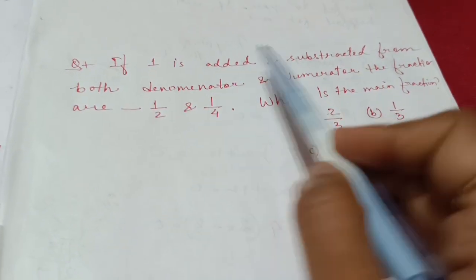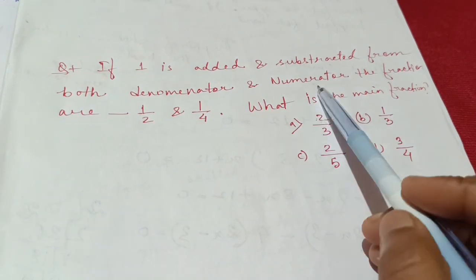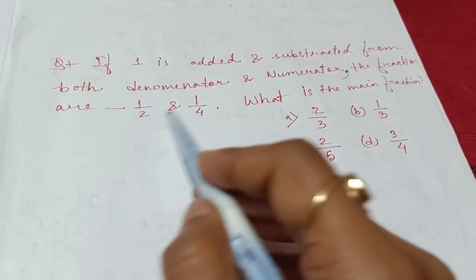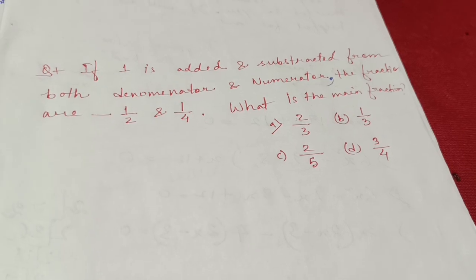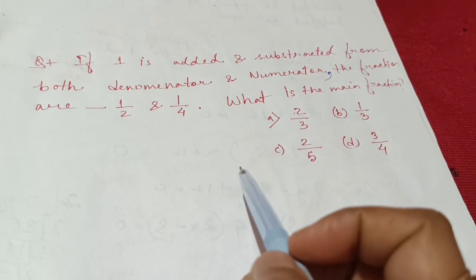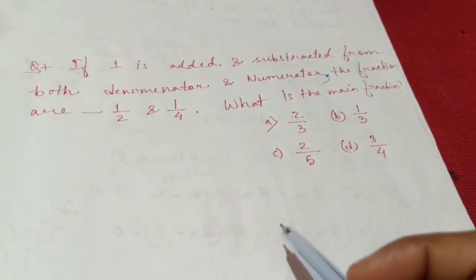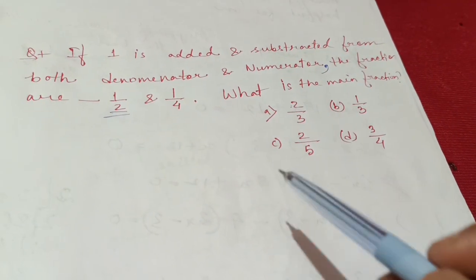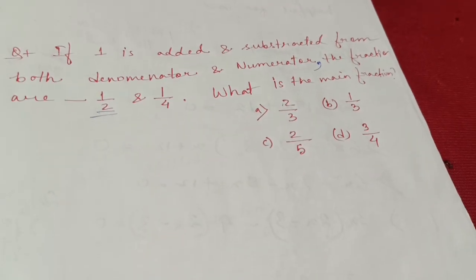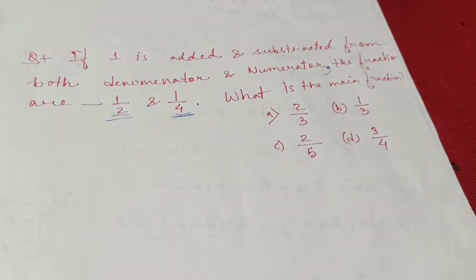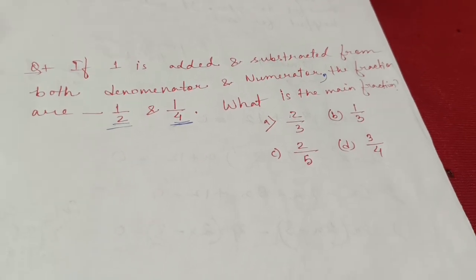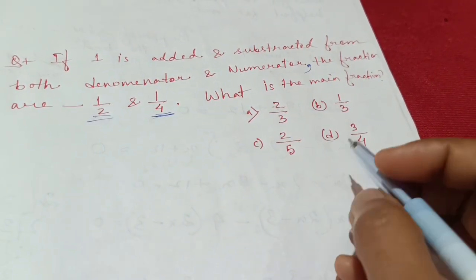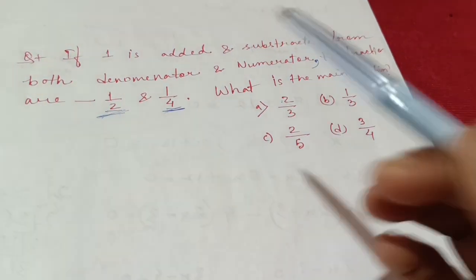If one is added and subtracted from both the denominator and numerator, the fractions are 1 by 2 and 1 by 4. What is the main fraction? If the batch is for 1 by 4, the amount of success is 1 by 2. So if the batch is for 1 by 2, it's 1 by 4. So the main fraction is 1 by 4.